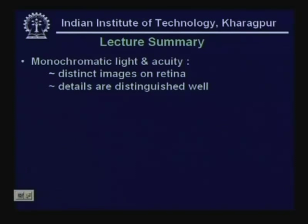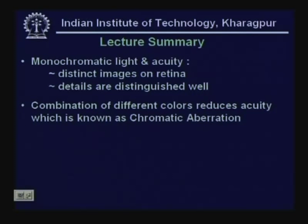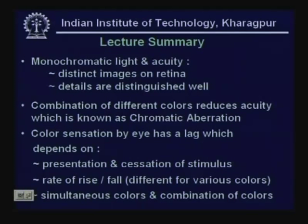With monochromatic light the eye's acuity is at its peak, forming distinct retinal images; a combination of colours reduces acuity. When focused for yellow light, a red signal focuses behind the focal point and a blue signal ahead, resulting in an error called chromatic aberration. There is a certain time lag for sensing different colours depending on how the stimulus is presented and removed, and this lag differs for different colours.